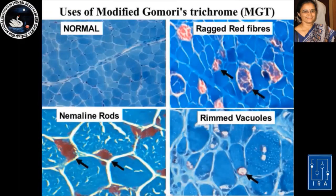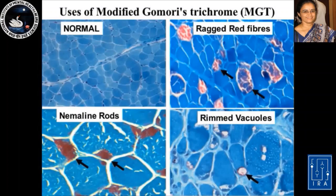This slide shows a muscle biopsy stained with the modified Gomory trichrome stain. This is most useful to identify three specific features: ragged red fibers seen in the top panel, which are very characteristic of mitochondrial myopathies; nemaline rods seen in the lower panel as red needle-shaped inclusions like a cap below the sarcolemma of each myofiber; and rimmed vacuoles wherein each vacuole is outlined by red granular material, a frequent feature seen in inclusion body myositis.